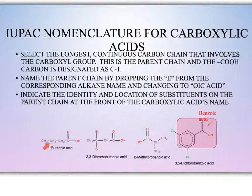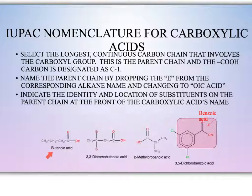Looking at this first example, it is four carbons long and has only single bonds. A four-carbon chain with single bonds would normally be called butane. So we name it by taking butane, dropping the -e, adding -oic acid — therefore it is called butanoic acid.